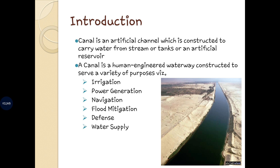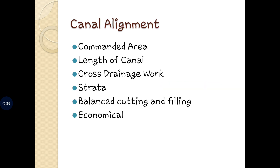Now let us understand various considerations which are made for canal alignment. Canal alignment is a very important topic. Various factors are: the area to be commanded by the canal irrigation should be maximum. The canal should be aligned in such a way that the maximum area to be cultivated should have the minimum length of the canal. The number of cross drainage works should also be less, which will ultimately reduce the cost of construction.